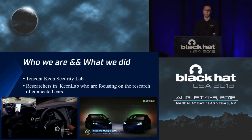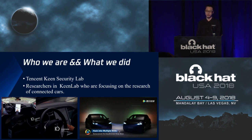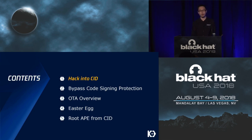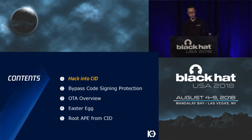In 2016 we successfully implemented a remote attack on Tesla Model S in both driving and parking mode. Today we will talk about the research we did last year on Tesla Model X, including what we found and how we customized an Easter Egg. Our presentation is divided into five parts: how we hacked into the central infotainment display, how we bypass code signing protection, the details of the OTA process, how we customized the Easter Egg, and how we rooted the APE remotely.